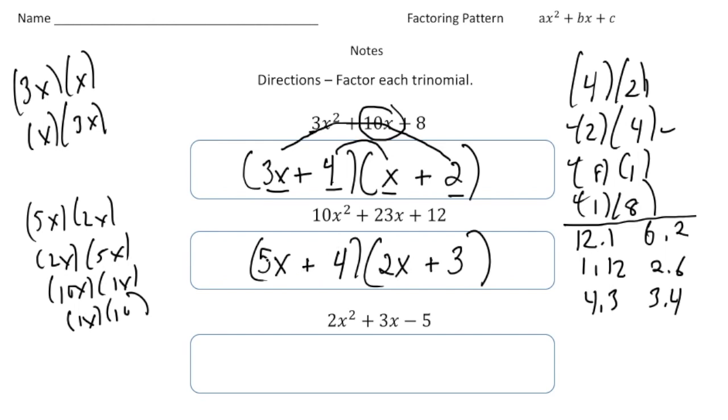All right, now let's do a FOIL. So 5x times 2x is 10x squared. 4 times 3 gives us the 12. Now here's the part I'm going to be careful with. 4 times 2x is 8x. And 3 times 5x is 15x. And guess what? 15x plus 8x gives us our 23x.